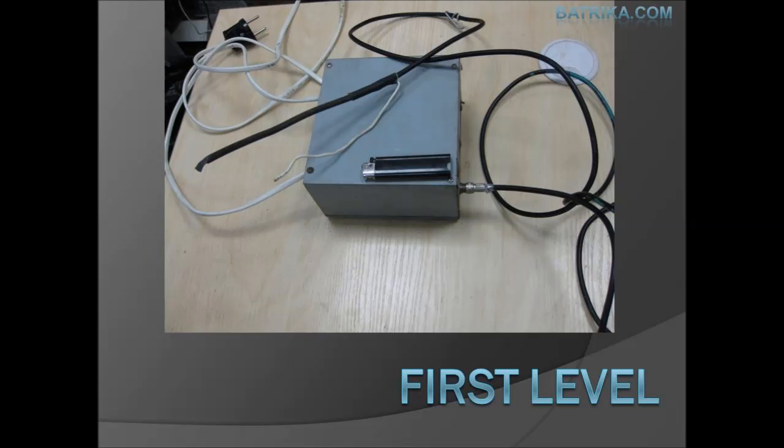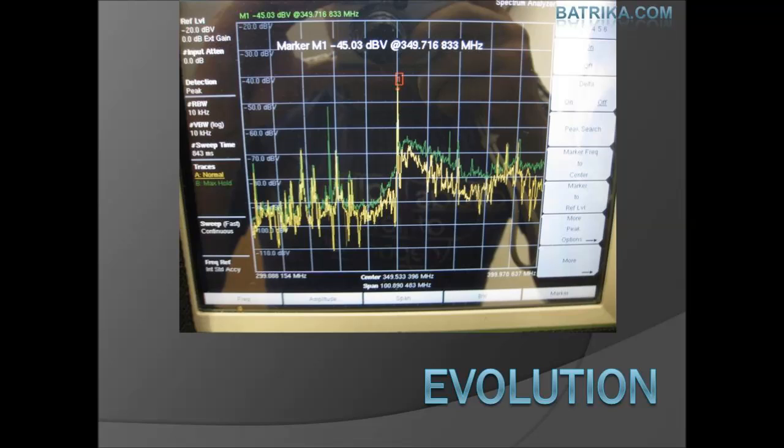These devices could be detected from quite a long distance. The second generation of the device is impulse. There is a spectrum on the photo recorded from the distance of 15 meters away from the device. Wanted signal merges with the background.